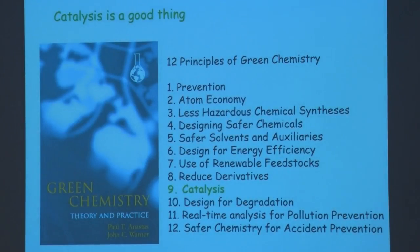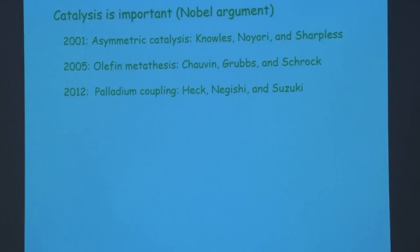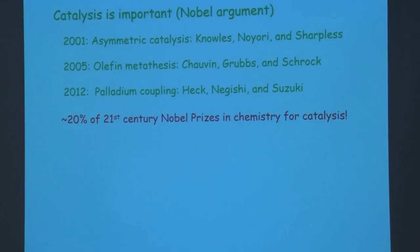Let's go a bit bigger than just what chemists say. The Nobel argument: there have been three Nobel Prizes in chemistry in the current millennium for catalysis. In 2001, asymmetric catalysis was awarded to Knowles, Noyori, and Sharpless. In 2005, there was a prize for metathesis. In 2012, a prize for palladium coupling. Statistically, about 20% odds of a catalysis award in the 21st century — that's pretty good.